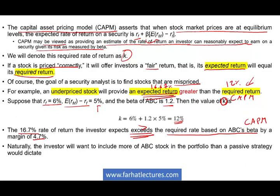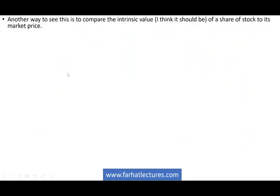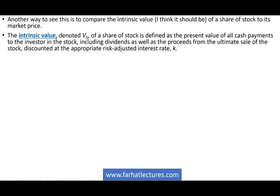16.7% is greater than 12% by 4.7%. Naturally, any investor will want to include more of ABC stock in their portfolio. Another way to say the same thing is to compare the intrinsic value of a stock versus its market price. Simply put, the intrinsic value is what you think the stock should be worth versus its market price — what it's trading at right now. The intrinsic value V0 is defined as the present value of all cash payments to the investor, including dividends as well as proceeds from the ultimate sale of the stock, discounted at the appropriate risk-adjusted interest rate.